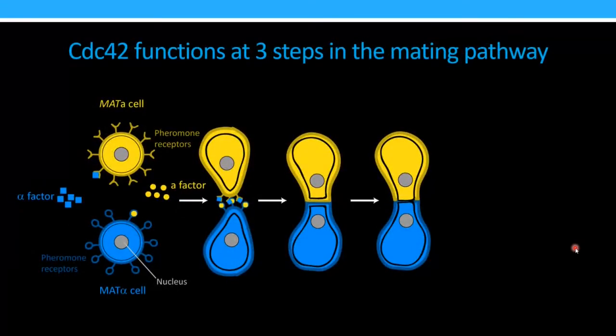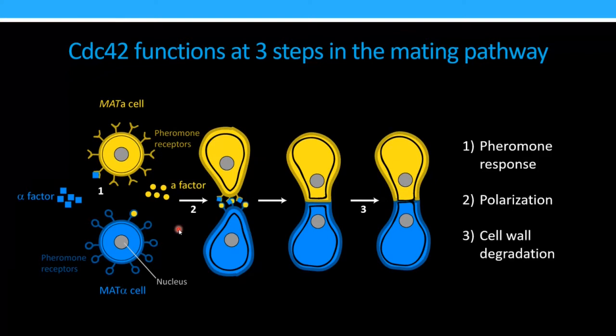CDC42 functions at three different steps in this mating pathway. It's required for the response to pheromones, so the upregulation of certain genes. It's also required for polarization, for the physical growth of these cells. But then we know that it is required for cell wall degradation as well. We have alleles of the protein where we can get to this point, and then like the FUS2 deletion, we never get that cell wall degraded.